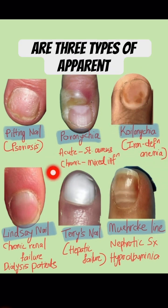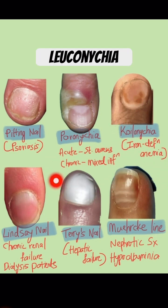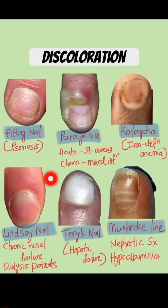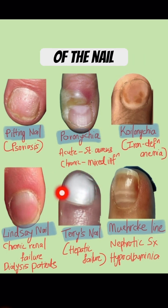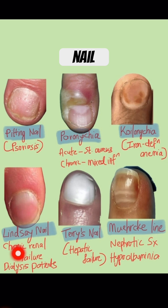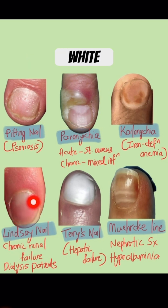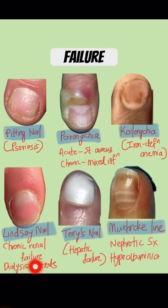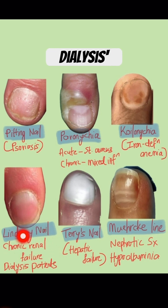These are three types of apparent leukonychia, which indicates whitish discoloration of the nail. This is a Lindsay nail where the proximal half of the nail is white with distal sparing, seen in chronic renal failure and in patients undergoing dialysis.